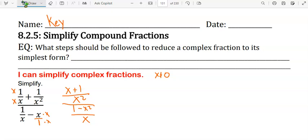Let's rewrite this out: x plus 1 over x squared divided by 1 minus x squared over x. This is the same thing as multiplying the reciprocal of the second fraction. Keep the first fraction, change the operation, and flip the second fraction.